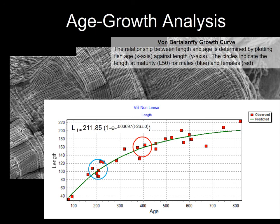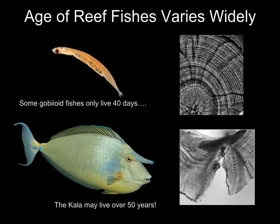After examining otoliths from several fish and counting all the rings, we plot a growth curve — usually a von Bertalanffy growth curve — looking at the relationship between age on the x-axis and size or length on the y-axis. We can then superimpose the size of maturity with the age-growth curve. The blue circle indicates the probable size of maturity of males around 90 millimeters, which corresponds to around 200 days, whereas females that matured around 160 millimeters have an age of maturity of around 400 days. Most fish have indeterminate growth — they keep growing throughout life, even if slowly — so a larger fish is also generally an older fish.